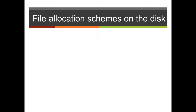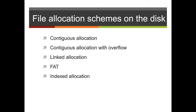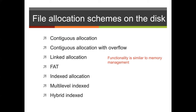There are various file allocation schemes that can be utilized: contiguous allocation, contiguous allocation with overflow, linked allocation, file allocation table, indexed allocation, multi-level indexed, and hybrid indexed. This functionality is similar to memory management and is implemented by a storage manager or file system that is part of our operating system. It's important to note that most operating systems support more than one file system.